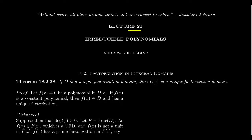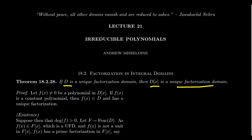In lecture 21, we're ready to prove a pretty important theorem that we've been building up towards for quite a while. What we're going to prove is that if D is a unique factorization domain — an integral domain for which every non-zero, non-unit element has a unique factorization into prime elements — then the polynomial ring D adjoin X is likewise a unique factorization domain.